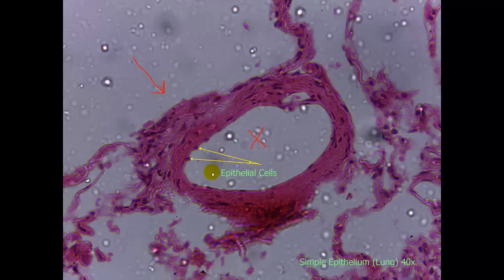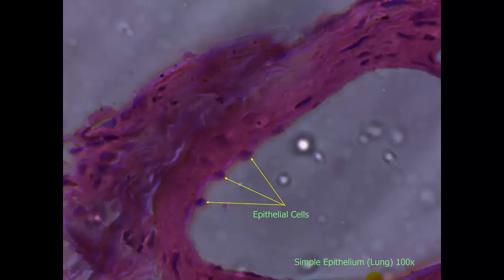On this first slide, we can see epithelial tissues. These are simple epithelial cells indicated by the arrows, and they are in fact lining a lumen indicated by the X. Here is the same tissue at 100x objective, which is the oil immersion objective. Here are the cells that were pointed out earlier — the simple epithelial cells, the rounded ones. We can also see at the bottom the squamous type cells as well.